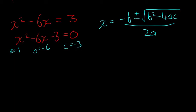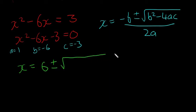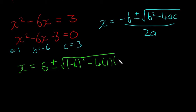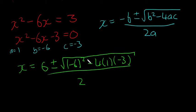Continuing with the quadratic formula: X equals minus B, which is minus minus 6, so plus 6, plus or minus the square root of B squared — that's minus 6 squared — minus 4 times A (which is 1) times C (which is minus 3), all over 2A, which is 2 times 1, so just 2.